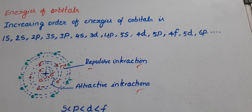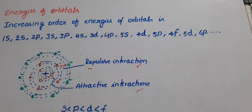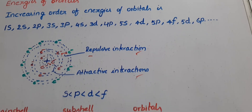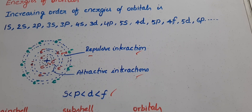The energy of attractive interactions will decrease with the increasing of atomic number because the number of orbits increases. So the order is justified: S is less than P is less than D is less than F.